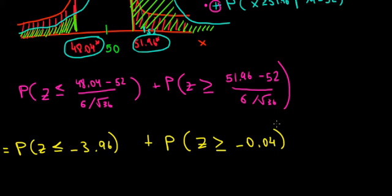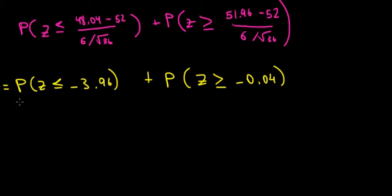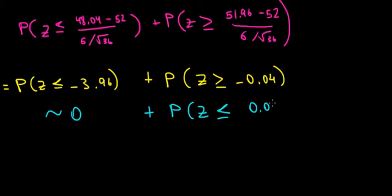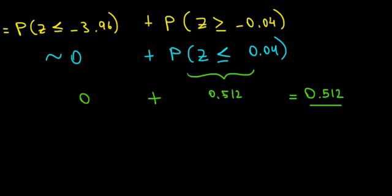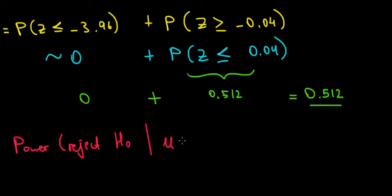If we look in the z distribution table, we find that -3.96 is really far in the tail, so we don't even have an actual probability for it — meaning it's pretty much 0. For the other term, since the table gives probabilities to the left of a z value, P(z ≥ -0.04) is the same as P(z ≤ 0.04), which equals 0.512. Since the first term is approximately 0, the power is equal to 0.512. This is the power of rejecting the null hypothesis given that the actual mean of the population is 52 grams.